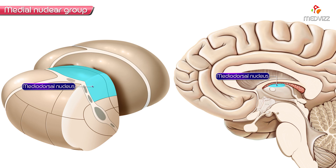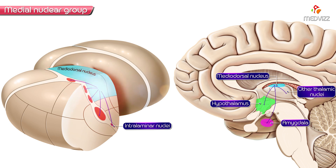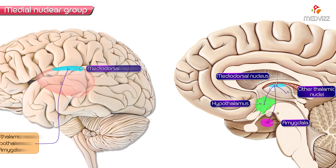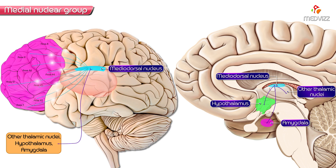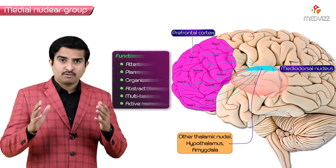The subcortical afferents to the mediodorsal nucleus come from the hypothalamus, amygdala, and from other thalamic nuclei, including the intralaminar nuclei and the nuclei of the lateral complex. These also send afferents to the mediodorsal group, so extensive reciprocal connections exist between the mediodorsal nucleus and the prefrontal cortex.